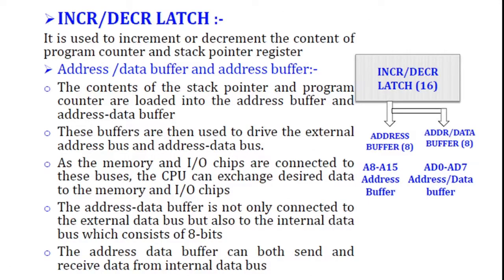The increment and decrement latch is used to increment or decrement the contents of the program counter or the stack pointer, which store 16-bit addresses. So it increases or decreases the address of RAM memory. Next, the address data buffer and the address buffer are used because when loading addresses and data onto the buses, those buses need a driver to carry signals from the 8085 to memory or vice versa. The buffer plays the role of driver: the address buffer drives the A15 to A8 bus, and the address data buffer drives the AD0 to AD7 bus.